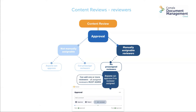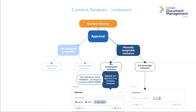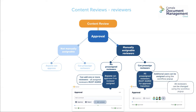Once a reviewer is assigned, only the assignee can undertake the approval. Adding multiple assignees means they must all agree on the approval decision. Assignees can be unassigned if they have not yet undertaken an approval decision. You can also choose to pre-assign users as reviewers, but for an approval that is assignable, these pre-assigned reviewers can be unassigned and additional reviewers can be assigned. There is no limit to the number of assignees.